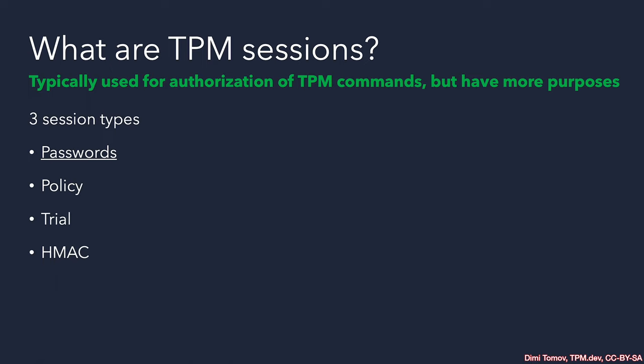Before we can answer what parameter encryption is, we need to understand what TPM sessions are. There are three types of TPM sessions. One of them is inherent because the authorization slots in any TPM command is a maximum of three. We can supply authorization for the parent, we can supply authorization for the child, and maybe we supply a policy. When we supply a password, we don't need to actually start a TPM session — we just provide the password in plain form. As you can imagine, this is not secure.